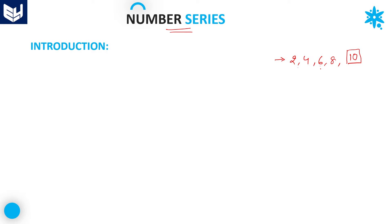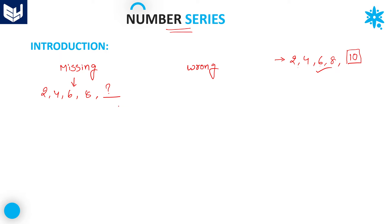I just want to give the introduction of number series — what kind of questions they ask. Basically, there is a chance of asking two types of questions in number series. One is missing number series and the second one is wrong number series. Missing number series is a fill-in-the-blank type question. For example: 2, 4, 6, 8, dash — what will come at this question mark? These kinds of questions come under missing number series. There is a sequence of numbers with a particular logic, and we have to identify that logic to find the next number.